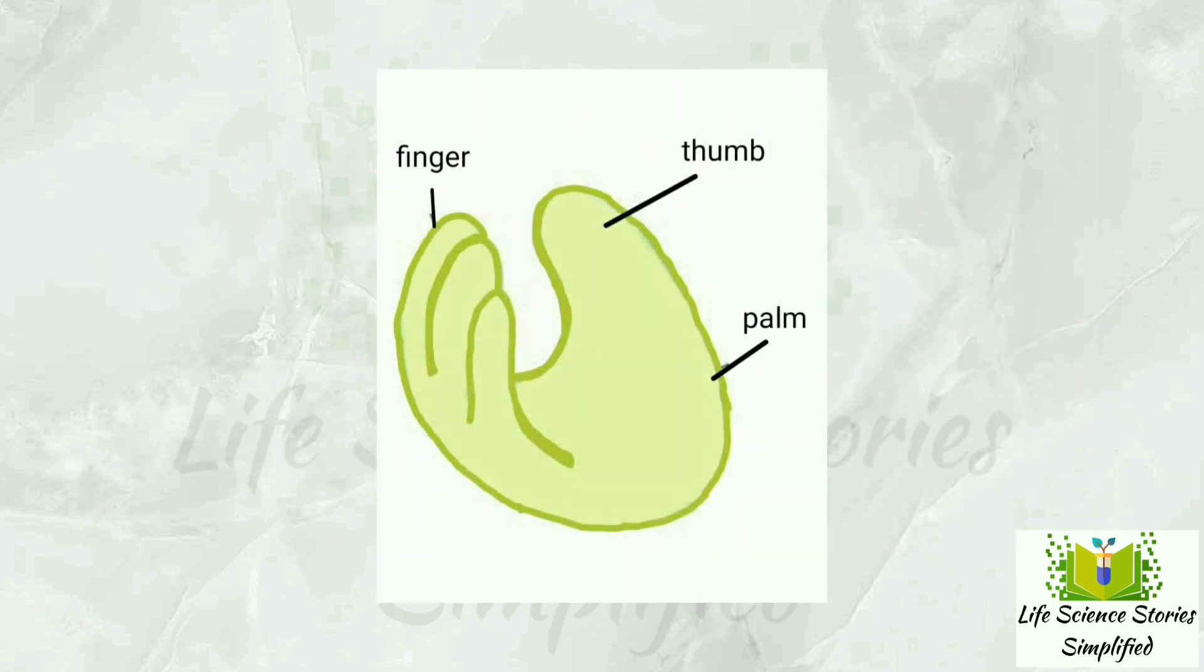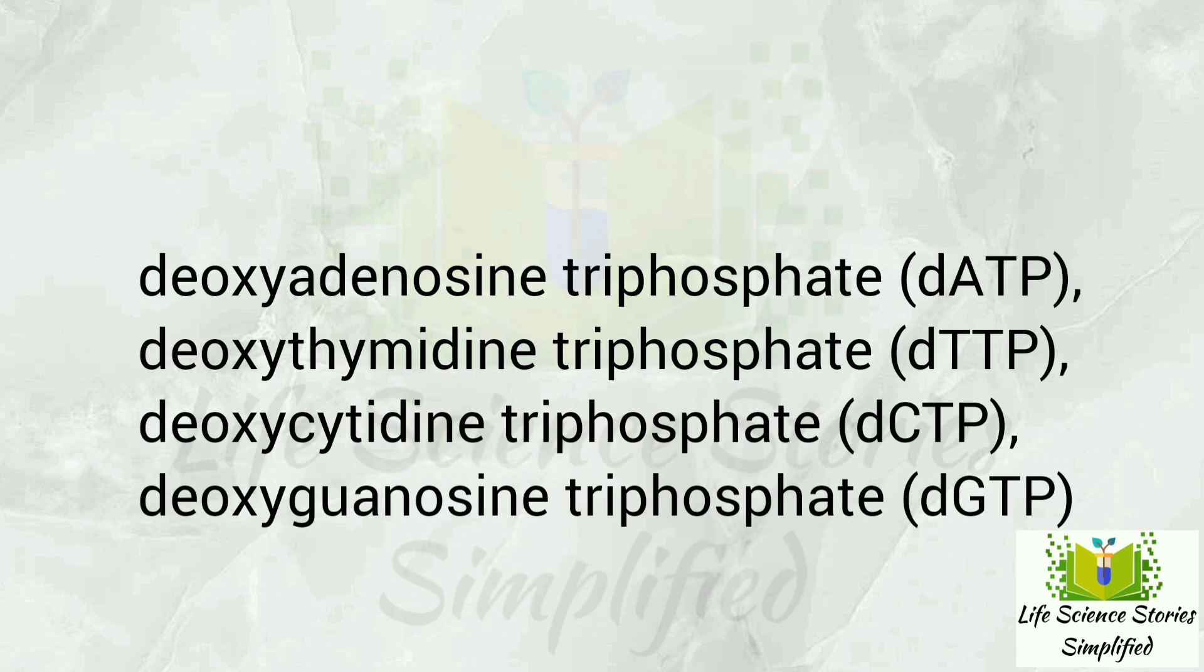DNA polymerase enzyme has one active site. The four dNTPs are: deoxyadenosine triphosphate (dATP), deoxythymidine triphosphate (dTTP), deoxycytidine triphosphate (dCTP), and deoxyguanosine triphosphate (dGTP).